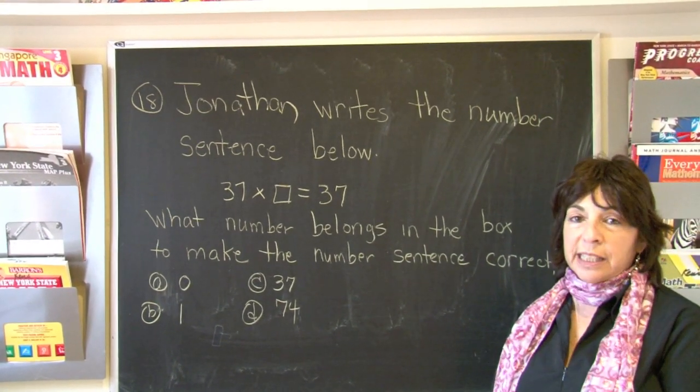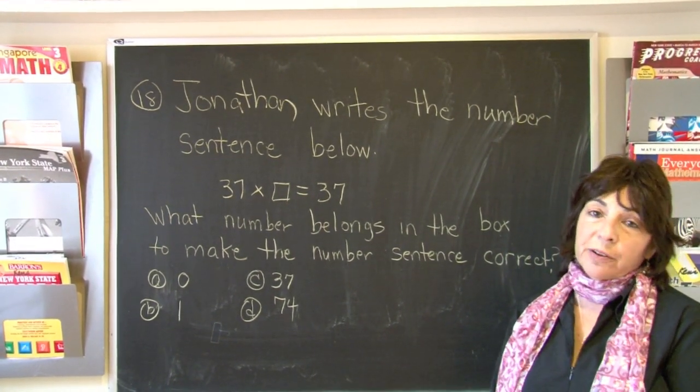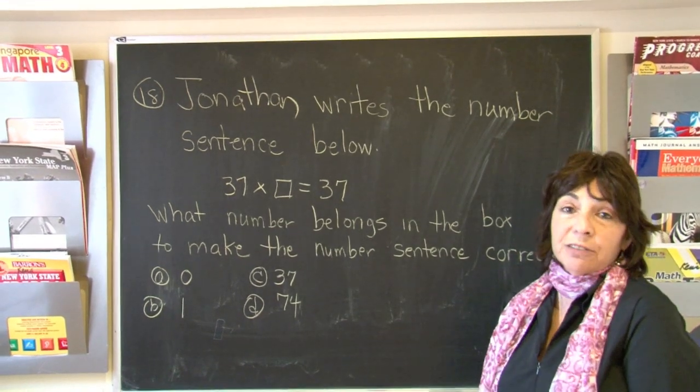We can have a thousand times zero, it would still be zero. That means a thousand groups of zero, which is zero.